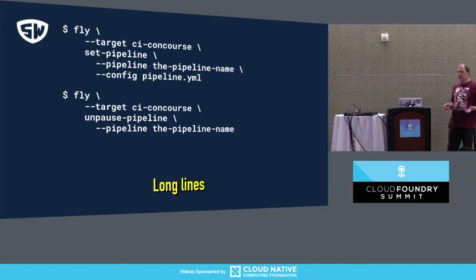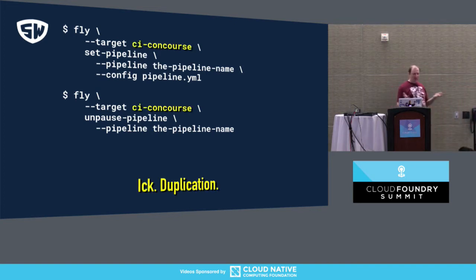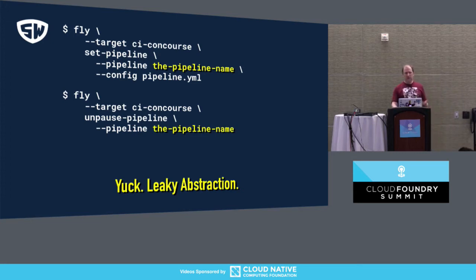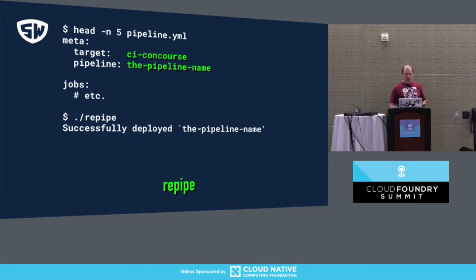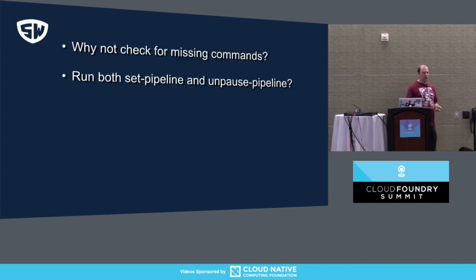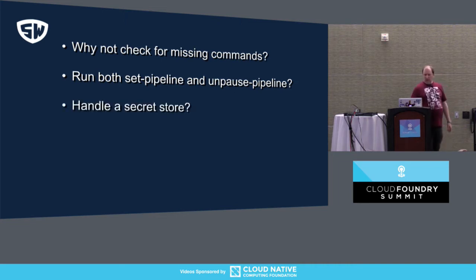If you're working on multiple pipelines, there's duplication. You have to type this again. The pipeline you're working on knows what it is, but you're typing it in. So what if we wrap this up in a script so that you're putting it into a YAML file, you run something, it pulls it out, and now you have a simple command? While we're doing that, why don't we check for missing commands and run the set and unpause and handle the stores?